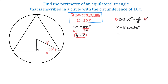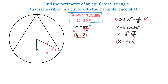Cosine of 30 degrees is square root of 3 over 2. Then x equals 8 times square root of 3 over 2. Since 8 divided by 2 is 4, x equals 4 square root of 3. We found x, and x represents half of the side of the equilateral triangle. To find one full side, we multiply x by 2, giving us 2 times 4 square root of 3, which equals 8 square root of 3.